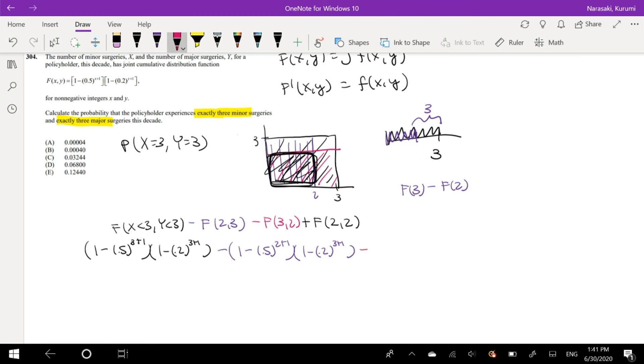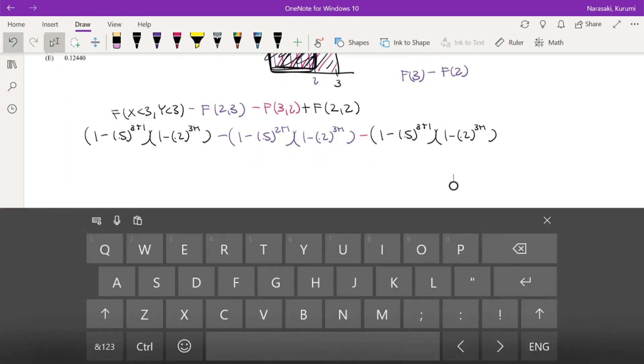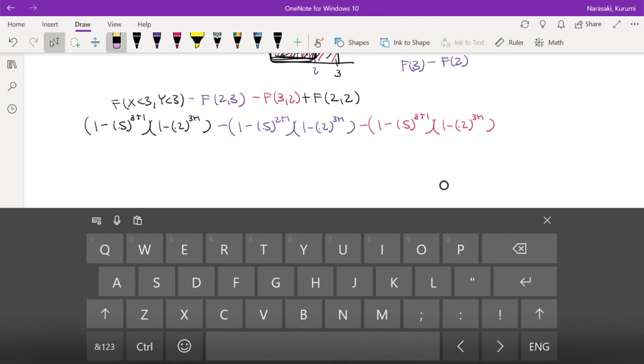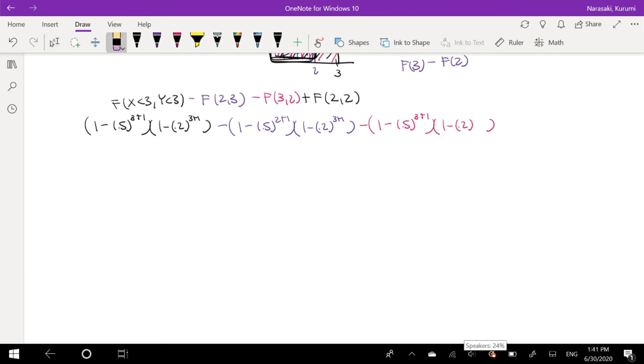Minus, minus. Paste it again. Paste the sucker again. This thing is red. And this is actually going from 3 plus 1 to 2 plus 1. 2 plus 1. Okay.